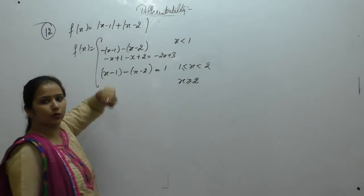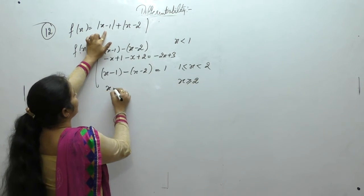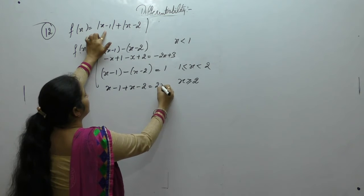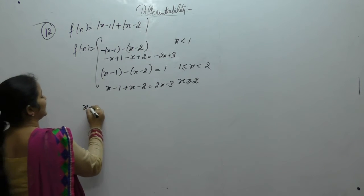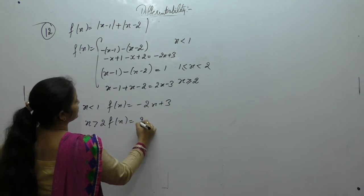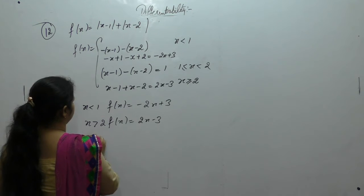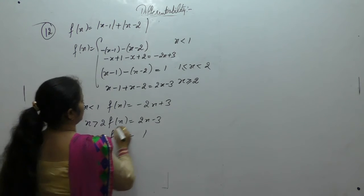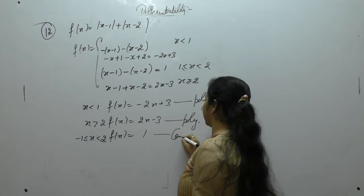When x is greater than or equal to 2, x is also greater than 1, so both moduli are positive and we get 2x minus 3. So f(x) = −2x + 3 for x < 1; f(x) = 1 for 1 ≤ x < 2; and f(x) = 2x − 3 for x ≥ 2. Since this is a polynomial or constant function in each interval, we need to check differentiability at x = 1 and x = 2.